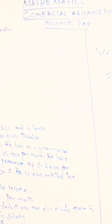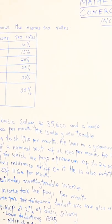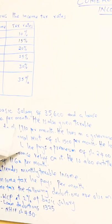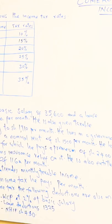Question here: Mr. [name] has a salary of 35,600 and a house allowance of 12,000 per month. He is also given a taxable allowance.